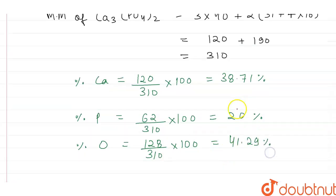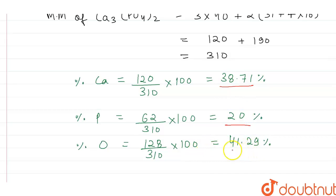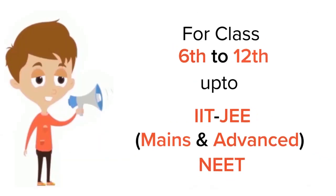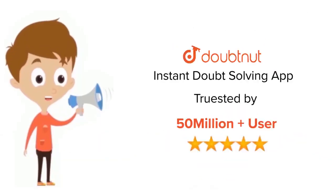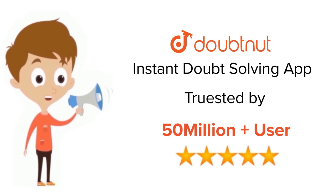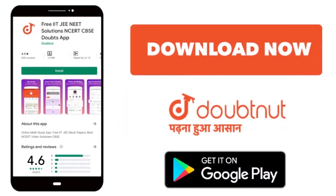So the mass percent of calcium is 38.71%, mass percent of phosphorus is 20%, and mass percent of oxygen is 41.29%. That is our answer. For class 6–12, IIT JEE, and NEET level, trusted by more than five crore students — download the DoubtNet app today.